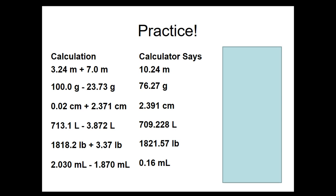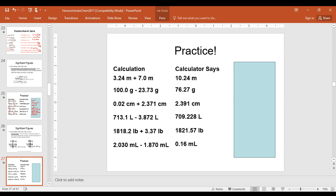Let's do the first one together. We have 3.24 and 7.0. You'll notice that 7.0 has the least number of digits following the decimal. We're going to drop the line after that zero. The calculator gives us 10.24, but we're going to round it to the tenths place, so this answer becomes 10.2 meters. Now try the other five problems, round to the correct number of significant figures, and then we will go over the answers.